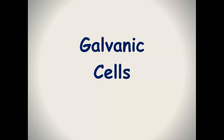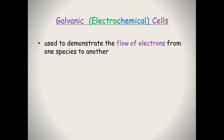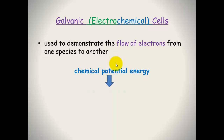This video is about galvanic cells. Galvanic cells are also known as electrochemical cells. They're used to demonstrate the flow of electrons from one species to another, and they're called electrochemical cells because they're changing chemical potential energy into electrical energy.